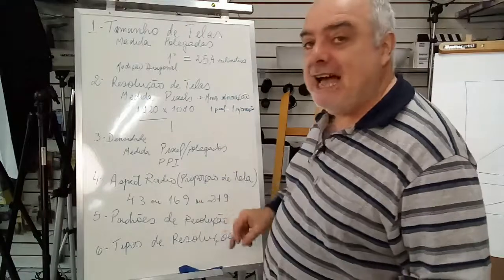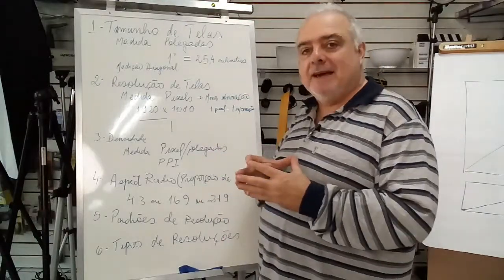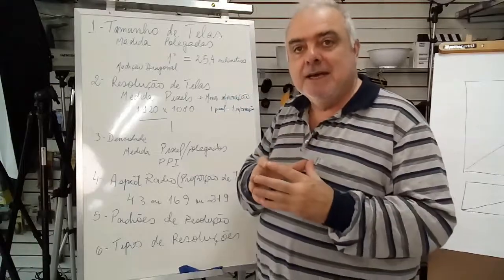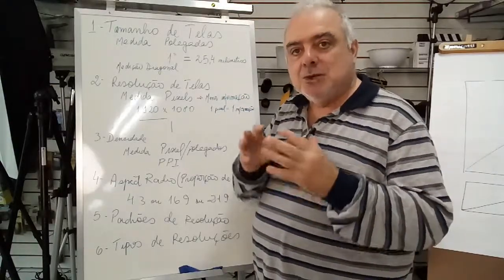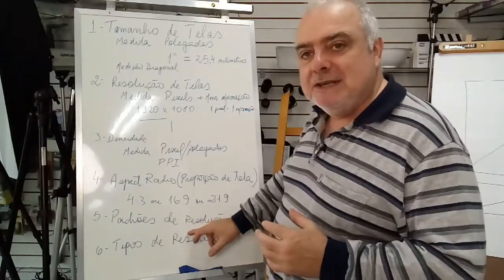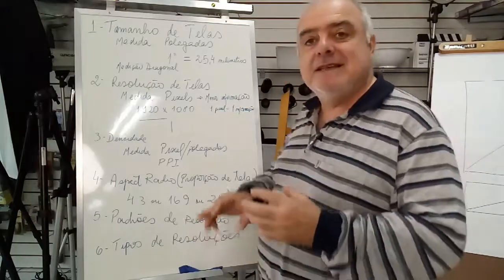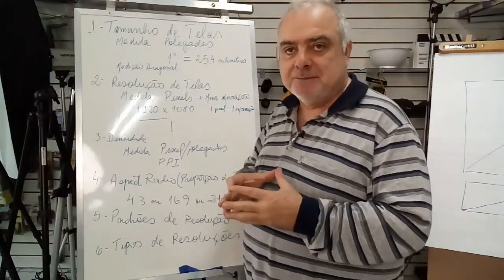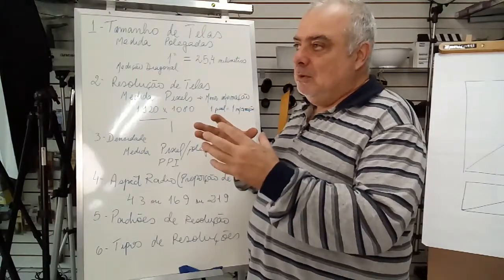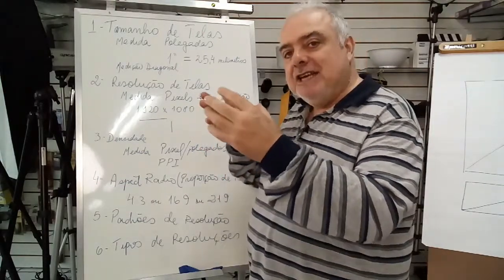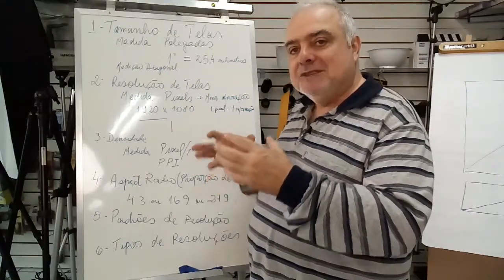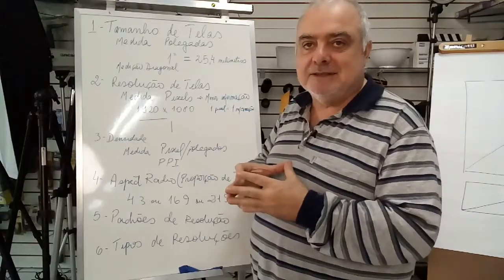O aspecto de rádio é a proporção da tela. Vamos explicar num vídeo especial sobre proporção da tela. Padrões de resolução: existem muitos padrões de resolução. O padrão de resolução é a quantidade de linhas e colunas que você pode enxergar nos detalhes da imagem que você está vendo.